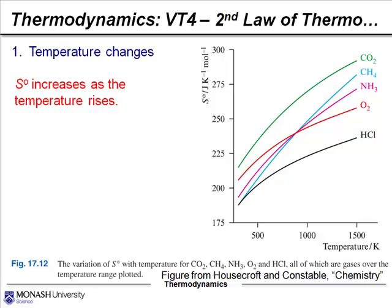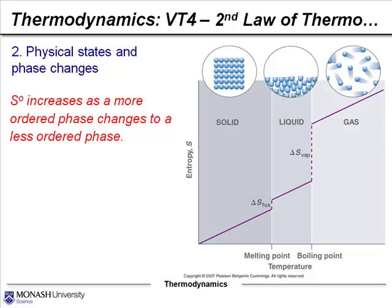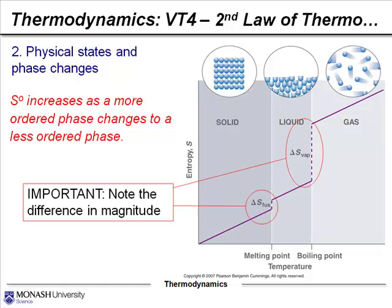The first parameter is temperature. As you increase the temperature of a species, the entropy value increases, and you can see that's true for these five species here. As the physical state changes, the entropy also changes. As we go from a solid to a liquid to a gas, you can see that the entropy is rapidly increasing. It's important to note that we also see an increase in entropy at those interfaces — as you go from solid to liquid and liquid to gas.